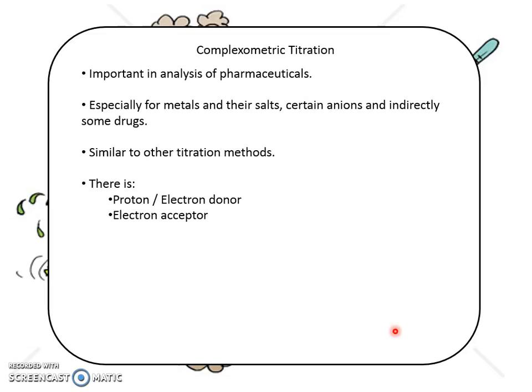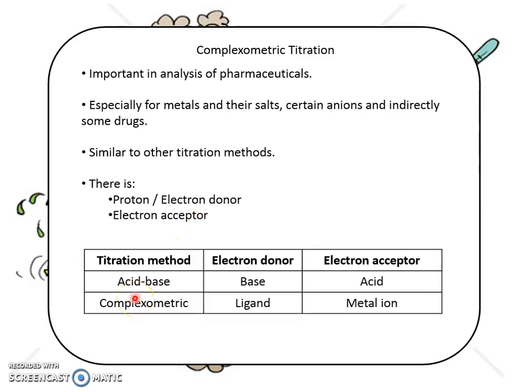Complexometric titration is important for the analysis of pharmaceuticals, especially to detect any metals in drugs or in a solution. Similar to other titration methods, in titration there will always be a proton or an electron donor or acceptor. In acid-base titration, the base is the electron donor and the acid is the electron acceptor. For complexometric titration, the ligand is the electron donor and the metal ion is the electron acceptor.